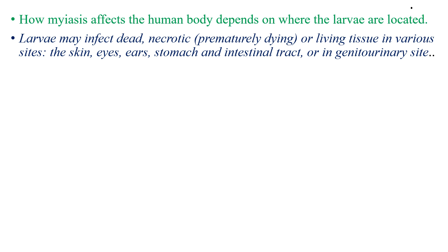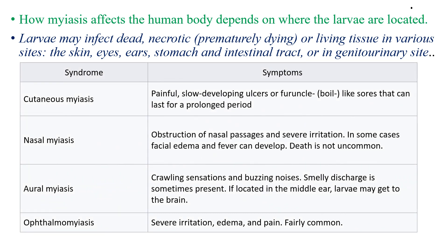How myiasis affects the body depends on where the larvae are located. Larvae might infect dead, necrotic, or living tissue in various sites like skin, eyes, ears, stomach, and intestinal tract, or in genitourinary sites. So there are cutaneous myiasis, nasal myiasis, oral myiasis, and ophthalmomyiasis, based on the location where the myiasis appears.